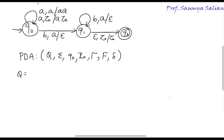To get full marks in university papers, complete your answers by defining the PDA seven-tuples. We know that a PDA is given by seven tuples: Q, Σ, q0, Z0, Γ, F, and the transition function δ.